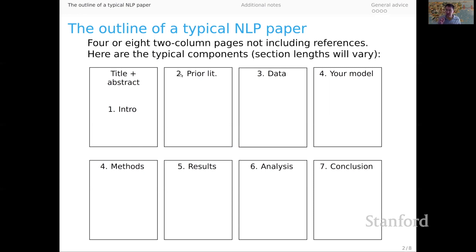In place two, you discuss the related work or prior literature or background needed to contextualize your work. Then there's typically a data section, followed by a section on a model, or the core proposal section of the paper. Then there'll be some methods related to the experiments, a reporting of the results, and then some analysis of what the experimental results mean, and possibly a short conclusion.